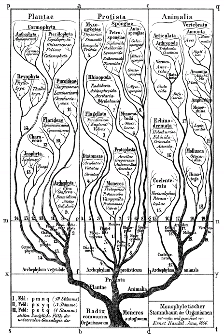Node names: Crown node refers to the most recent common ancestor of the sampled species of the clade of interest. Stem node refers to the most recent common ancestor of the clade of interest and its sister clade.